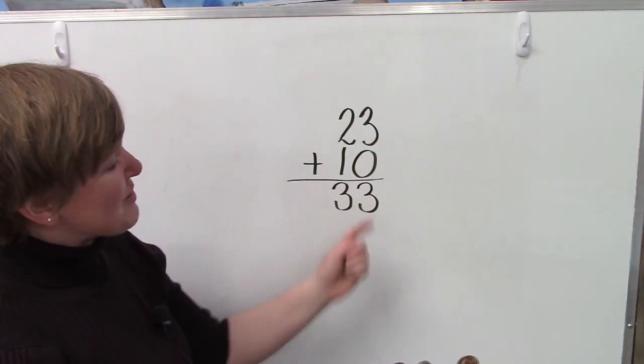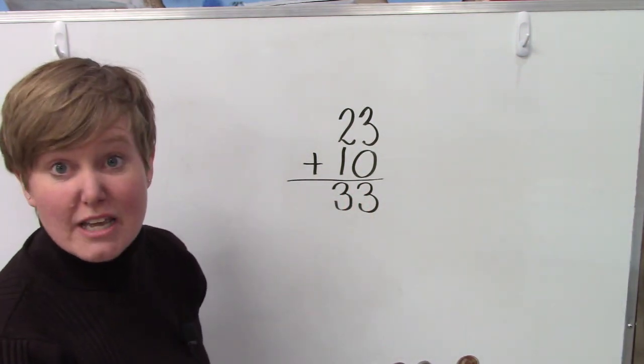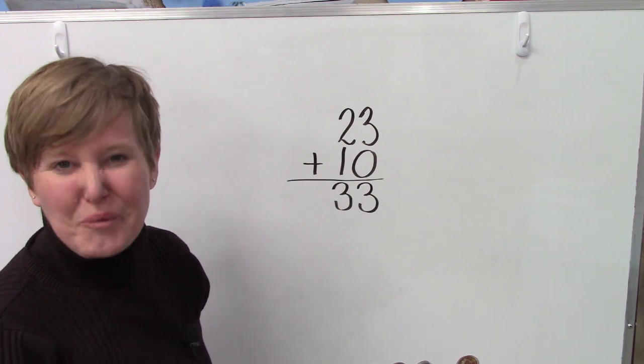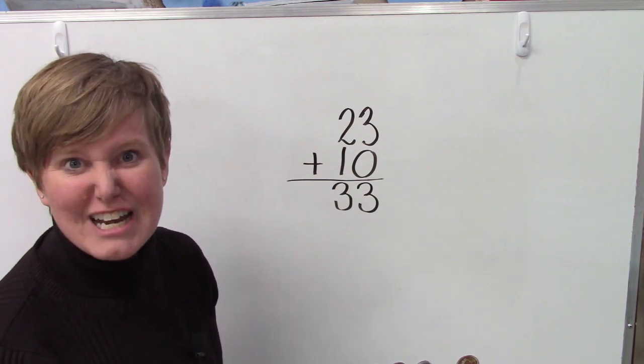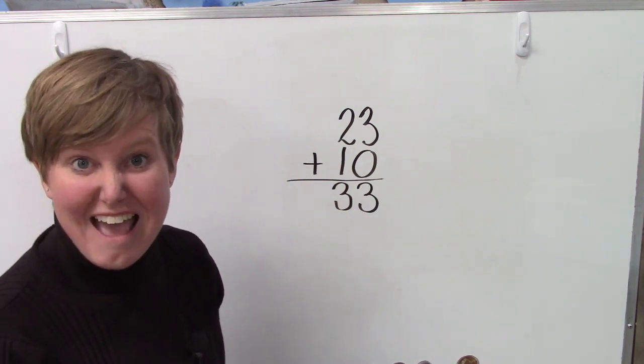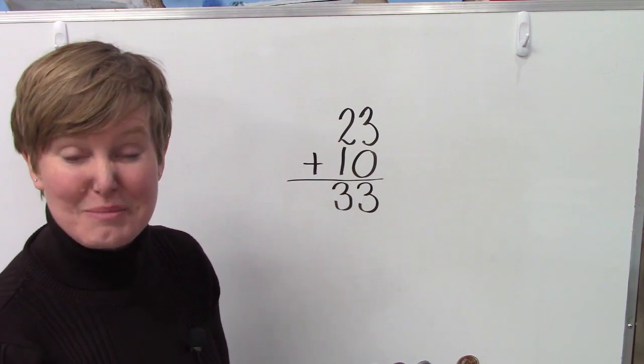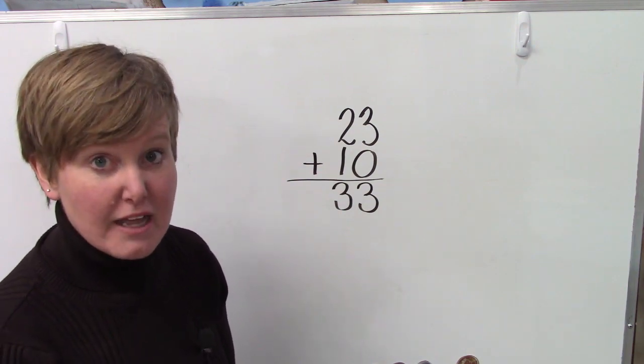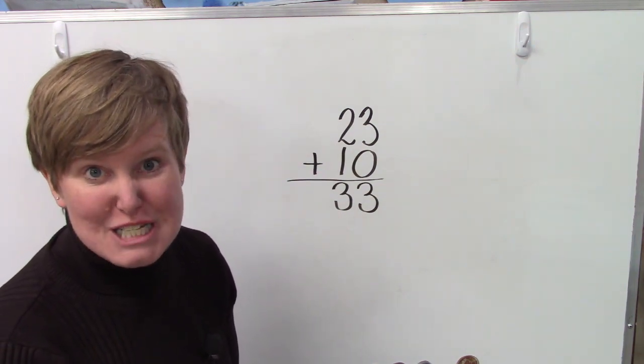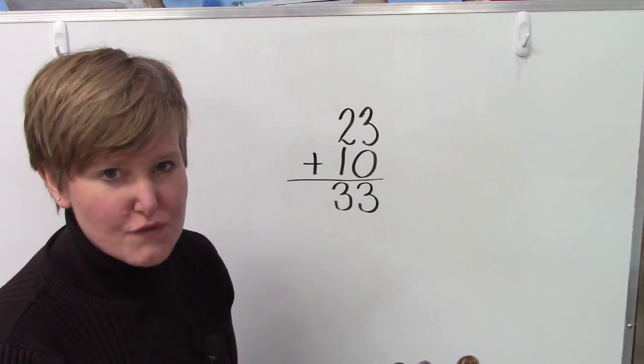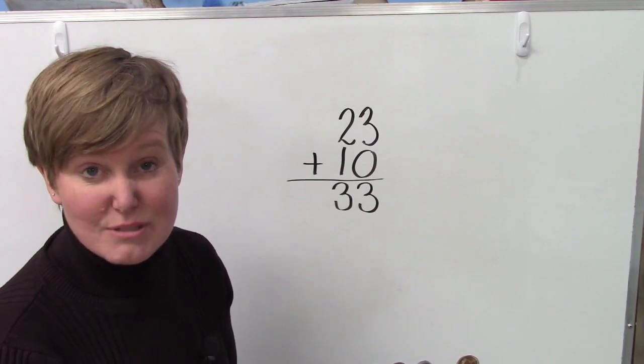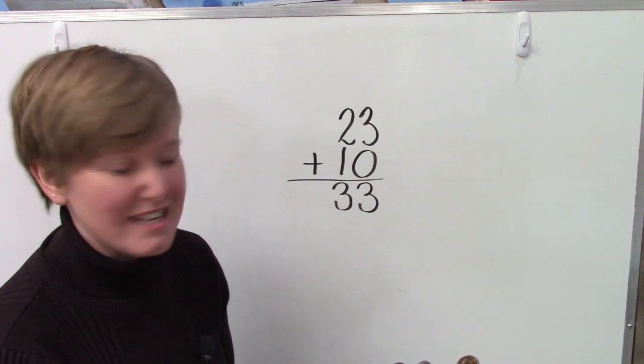23 and 33. Do you see that they both end with the number 3? Just like in our 100's chart. In our 100's chart, every number in the column ended with the same number. And then, if you remember, in our tens place, the numbers followed a pattern. They counted up or down, depending if we were adding or subtracting.